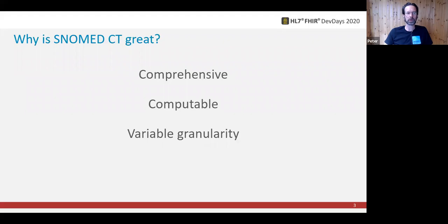I also wasn't going to mention post-coordination, which allows systems to create new concepts at runtime. In FHIR, wherever you see a slot for a SNOMED code, you could, in theory, equally pass one that you've just created, fully modeled as a SNOMED expression. Similarly, I won't be mentioning the rules about concepts in post-coordination, which are specified by a machine-readable concept model, so any new concept you create will fit into the right place in the hierarchy. So I didn't mention those things, and there are only three bullet points on this screen.